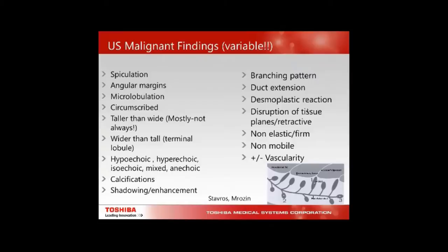Stavros and Rosen have given us things to look for with malignant findings: spiculation, angular margins, microlobulation, and circumscribed masses. Most breast cancers start off taller than wide because they start at the end of the TDLU and migrate down, though larger breast cancers can be wider than tall.